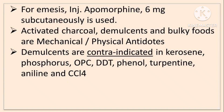Demulcents are contraindicated in kerosene, phosphorus, OPC, DDT, phenol, turpentine, aniline and carbon tetrachloride. Demulcents are oily substances and they form a coat on the stomach wall, so in all oil-soluble poisons they are contraindicated — kerosene, phosphorus, OPC are fat-soluble poisons.